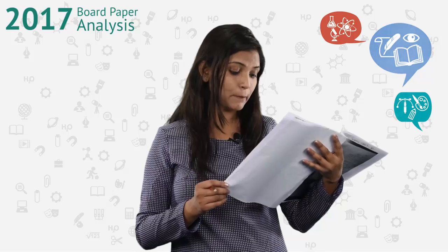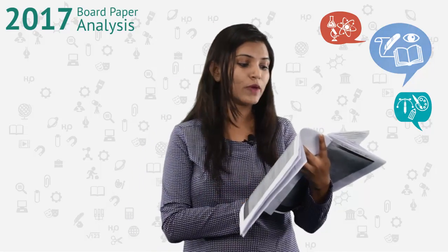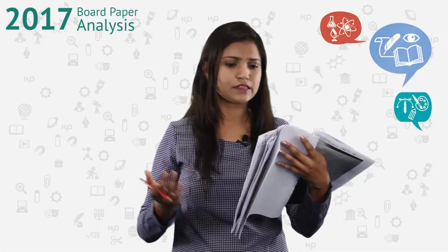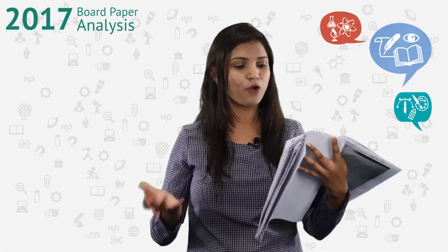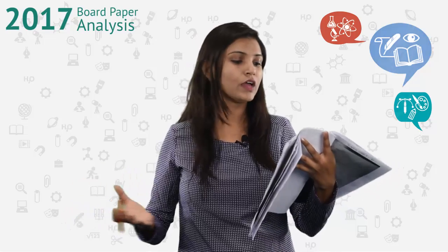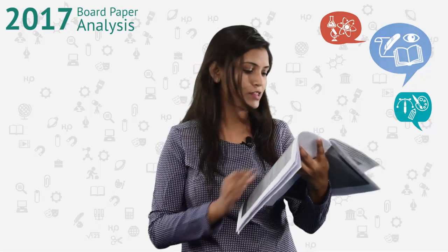Questions 11, 12, and 13 are from the chapter on reproduction — all straightforward. Planaria is regeneration, Bryophyllum is vegetative propagation, and when sporangia burst, spores come out and if they get favorable conditions they start growing and produce a new organism. That's three plus three plus three — nine marks.